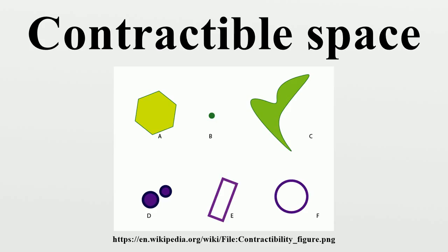Any Euclidean space is contractible, as is any star domain on a Euclidean space. The Whitehead manifold is contractible. Spheres of any finite dimension are not contractible. The unit sphere in an infinite-dimensional Hilbert space is contractible. The house with two rooms is a standard example of a space which is contractible, but not intuitively so. The cone on a Hawaiian earring is contractible, but not locally contractible or even locally simply connected.